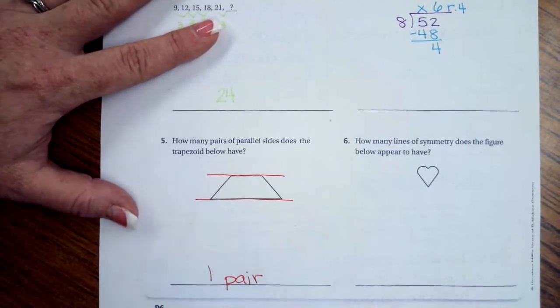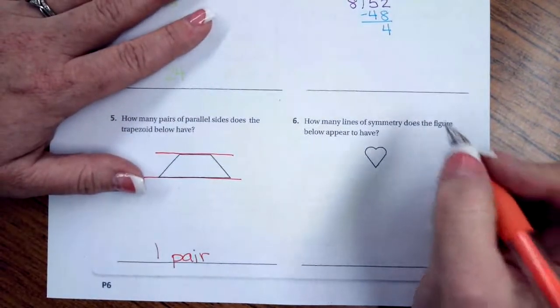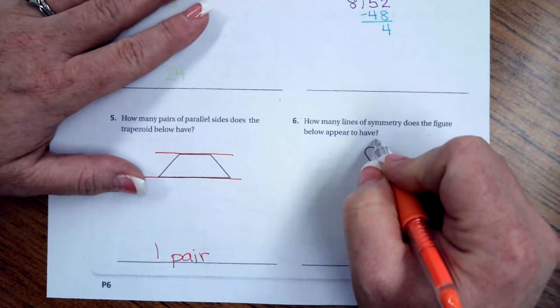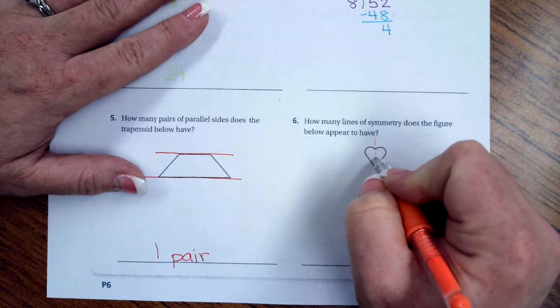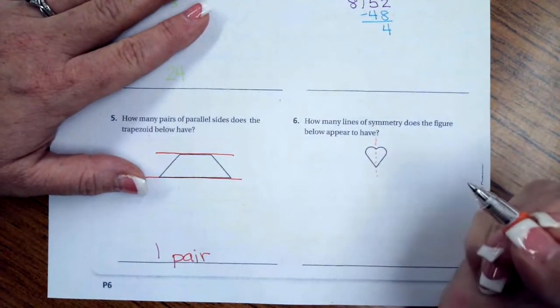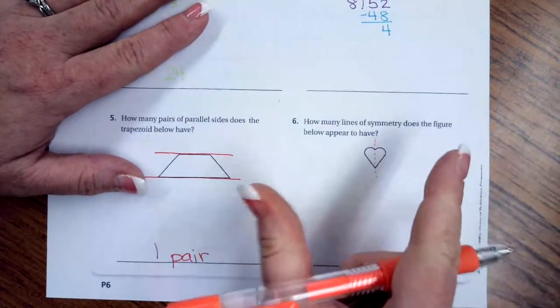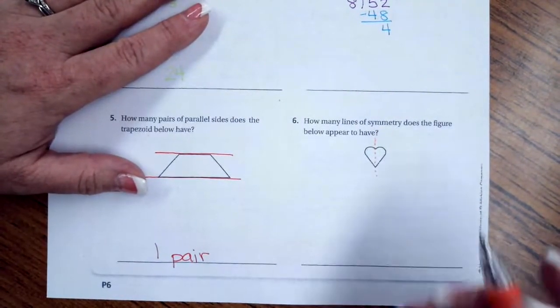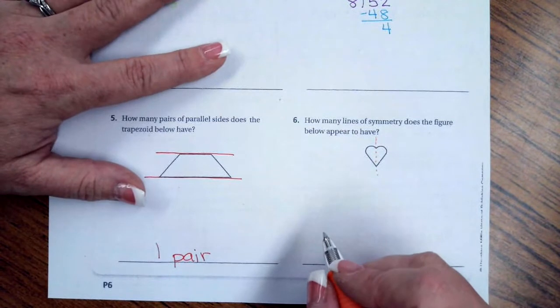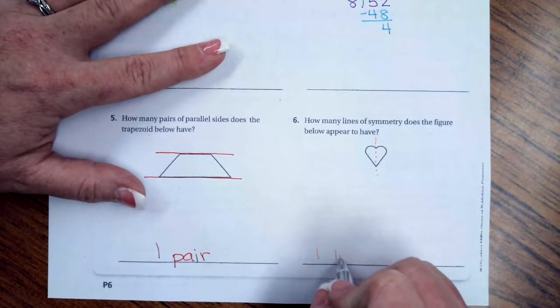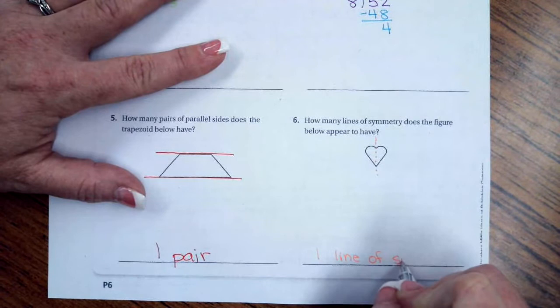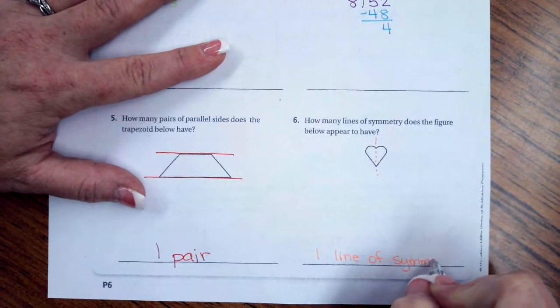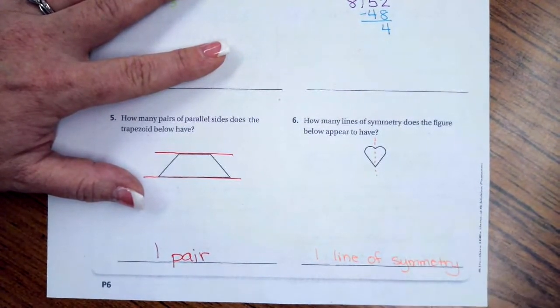Now, how many lines of symmetry does the figure below appear to have? The only line of symmetry is going to go right down that middle. That's the only place that you can fold it in half and have both sides match up perfectly. So, it is going to be one line of symmetry.